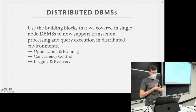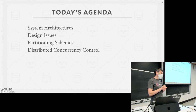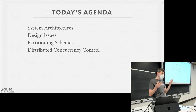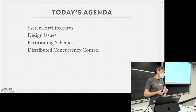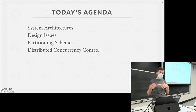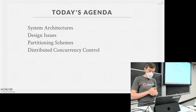Concurrency control is definitely harder, and logging and recovery is harder as well. Today we'll talk about the different types of system architectures for a distributed database system at a high level. Then we'll talk about what we have to consider when we actually build one. Then we'll talk about how to partition the data across multiple nodes. And then I'll give a teaser at the end about the challenges of distributed concurrency control — how do we take two-phase locking or OCC and make that run across multiple nodes? The spoiler is: it does, but it's slow and it's hard.